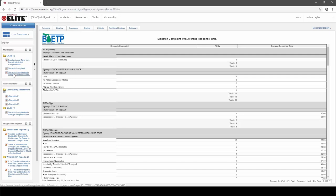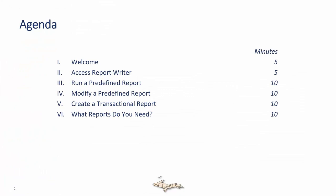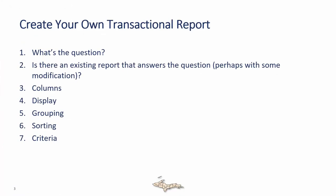Next, let's create our own transactional report from scratch. Here's the sequence of steps: first, what's the question you want to answer? Then, is there an existing report in the system that already answers that question, or comes close to it so you'd only need a few modifications? To actually set up the report, you'll go through several tabs: you'll set up the columns you want to show, some display options, how you want the data grouped, how you want it sorted, and finally the criteria you want to apply.